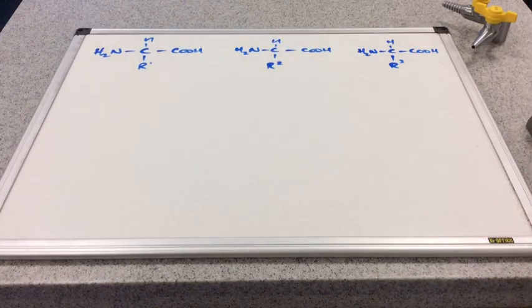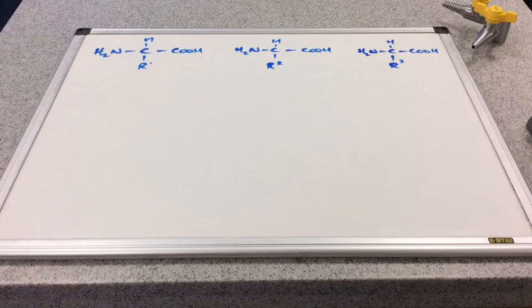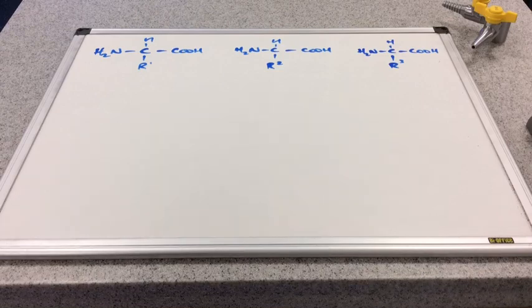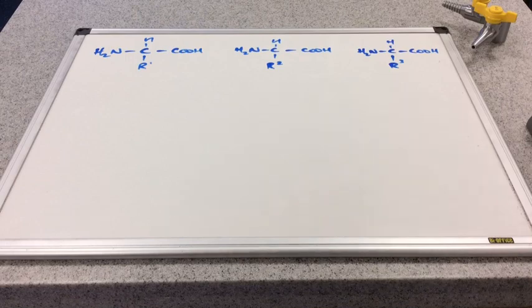Then this gives rise to an absolute myriad of possible products from these condensation reactions. So these protein molecules that are formed by the condensation reactions of amino acids, there are huge, huge numbers possible.